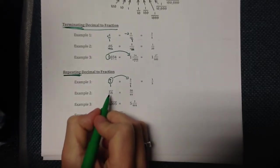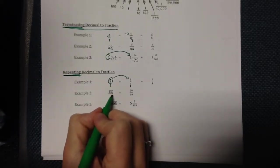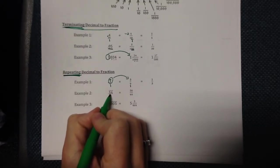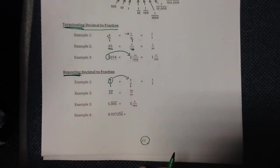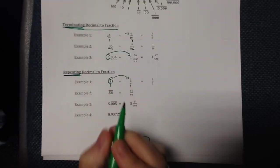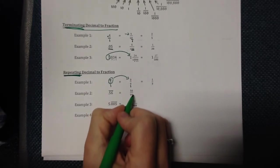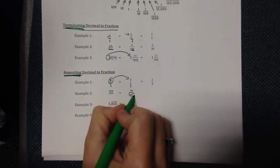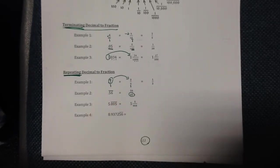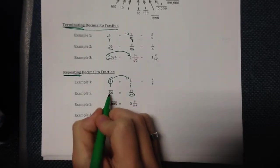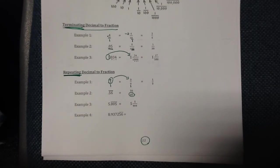On example two, there are two numbers underneath our repeat line, so we're going to put two nines on the bottom of our fraction and the fifty-six just goes on the top.